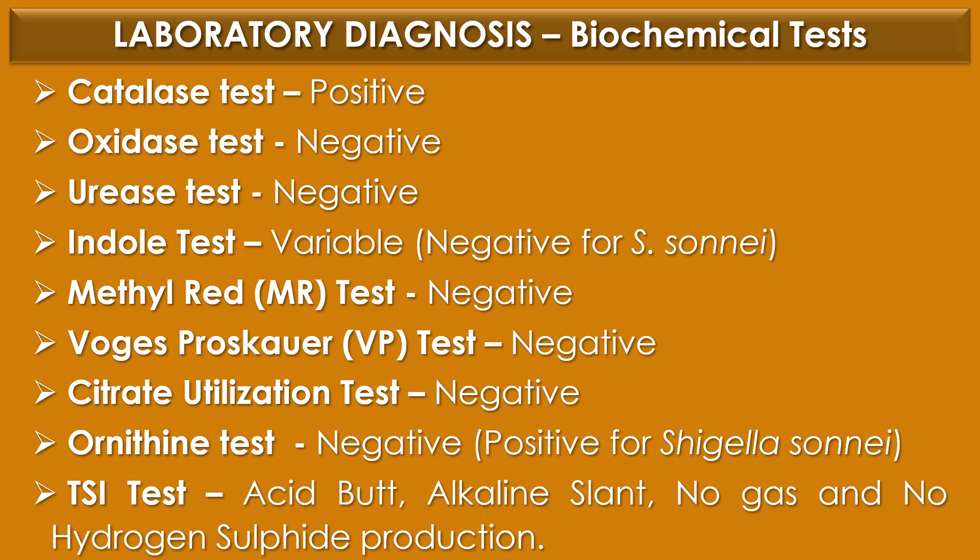Biochemical test identification: Catalase test positive; Oxidase test negative; Urease test negative; Indole test variable but negative for Shigella sonnei; Methyl red (MR) test negative; VP (Voges-Proskauer) test negative; Citrate utilization test negative; Ornithine test negative but positive for Shigella sonnei alone. In TSI test, Shigella species shows acid butt, alkaline slant, no gas, and no H₂S production.